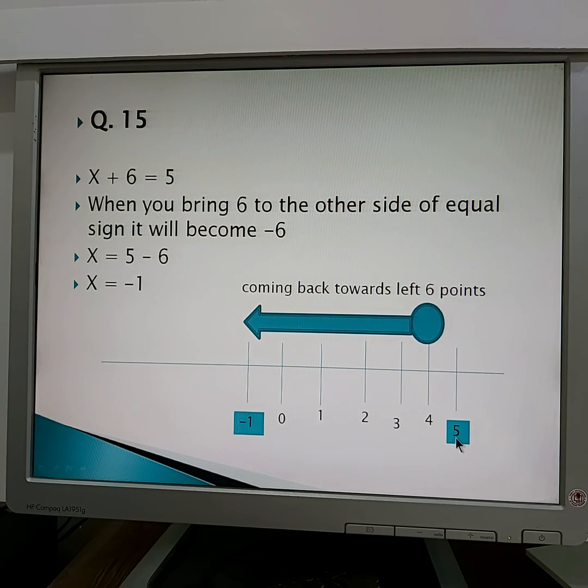Now before 5 what is? 4. Then 3, then 2, then 1, then 0. So the answer is minus 1. It means that 5 minus 6 equals minus 1. This is not necessary to draw all the time this kind of thing. Just it is for your explanation. You can do it directly, but must be careful about the negative signs.